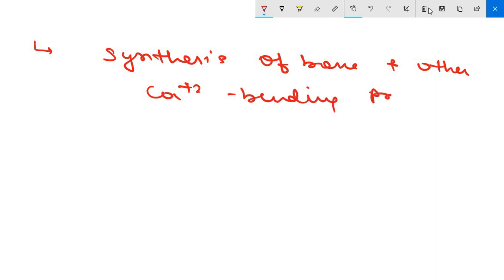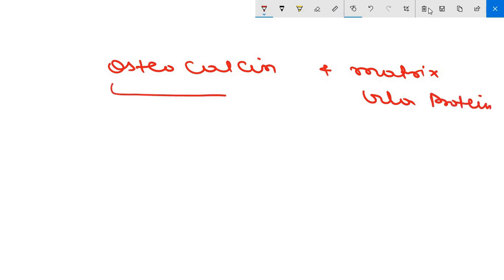Vitamin K is also important in synthesis of bone and other calcium binding proteins. A number of other proteins undergo the same vitamin K dependent carboxylation of glutamate to carboxyglutamate including your osteocalcin and matrix gla protein in the bone. These two also go carboxylation in the same way as clotting factors is going.